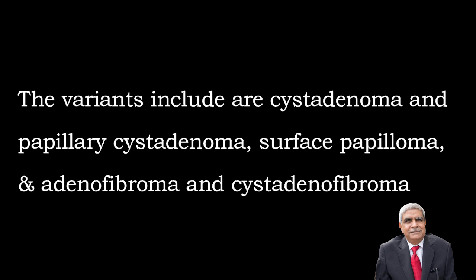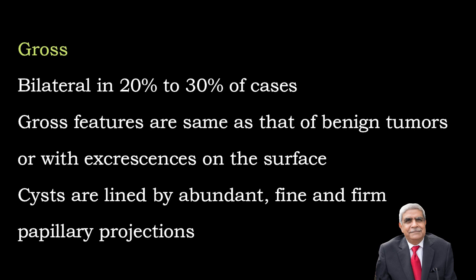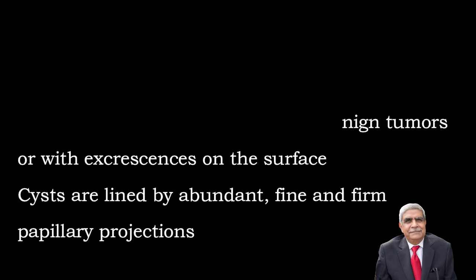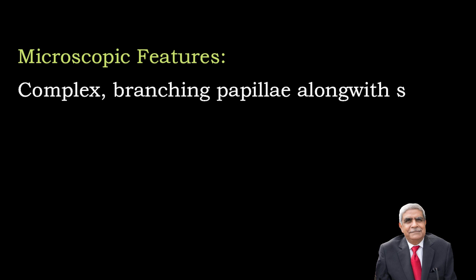Borderline serous tumors have a peak incidence between 30 to 60 years of age. They make up about 10 percent of all serous tumors; 20 to 30 percent of them are bilateral. Their gross features are very similar to those of benign serous tumors, or they may have more excrescences on the surface. When in the form of cysts, they are lined by abundant fine, somewhat firm papillary projections.